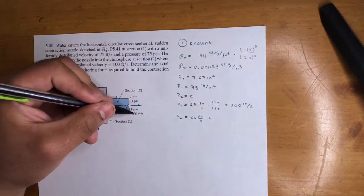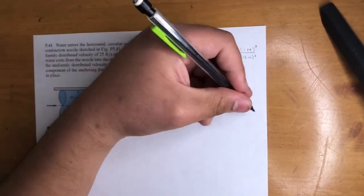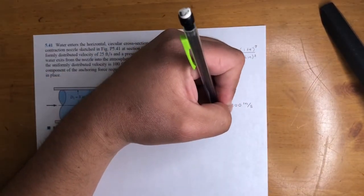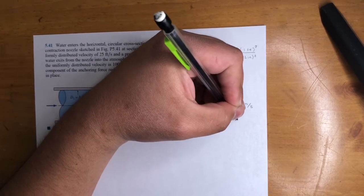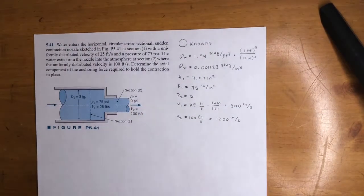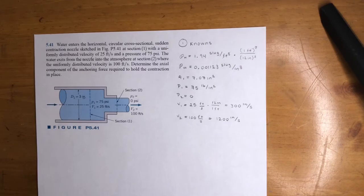Then when you convert that, multiply it by 12 again, similarly to this one, you will get 1200 inch per second. And I think that's it. We got everything covered.